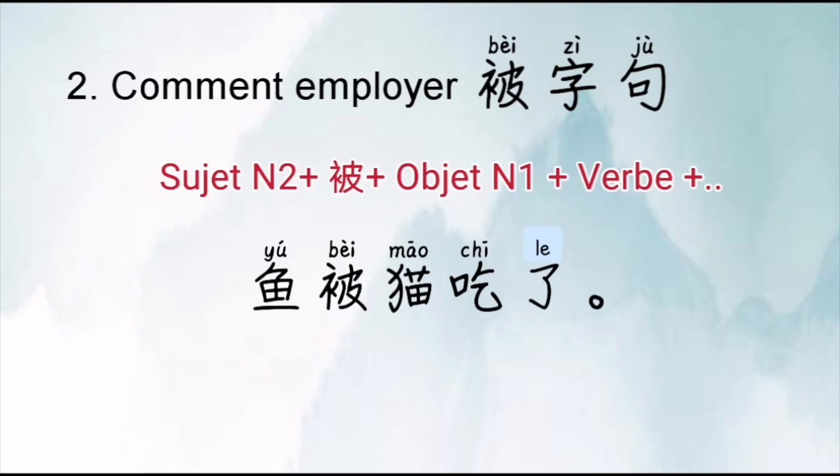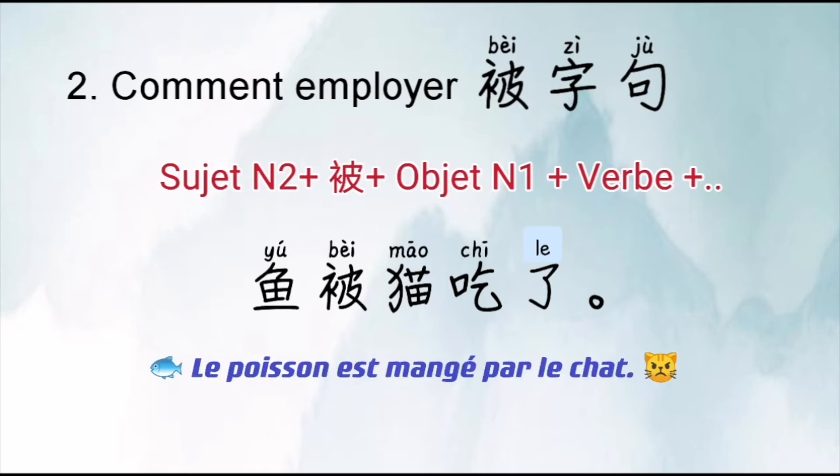Donc le premier exemple : dans les BA ZI JU, YU était l'objet. Maintenant, dans les phrases passives avec BEI, YU devient sujet. Cette phrase veut dire : le poisson est mangé par le chat.